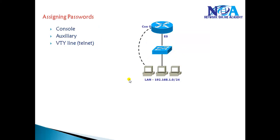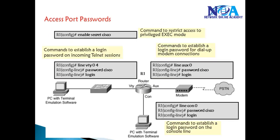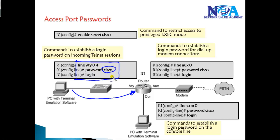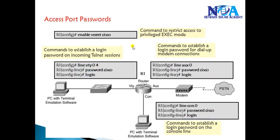These are three different lines from where we can access the device. Using basic commands, if any user is trying to access the device via the VTY line using Telnet, we want the router to prompt for the password — for example, 'cisco' — and then we give the login option. The same applies for the auxiliary line. By default it is 'no login', but we can define a login option so the device prompts for a password whenever a user tries to enter through the command line.